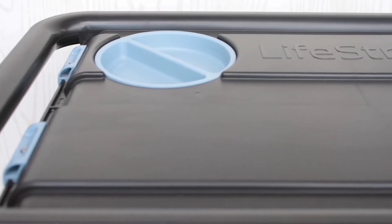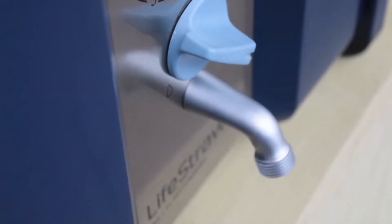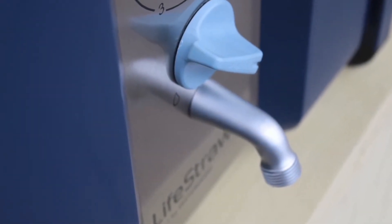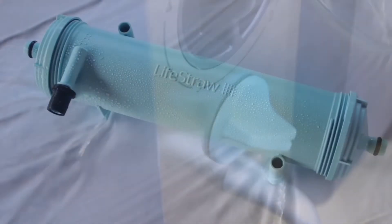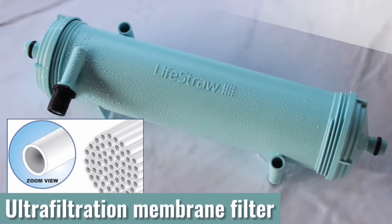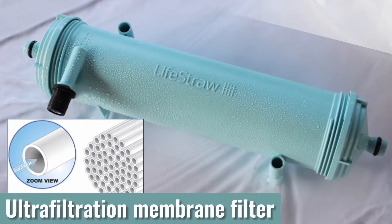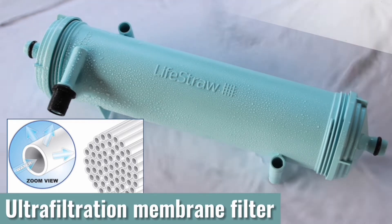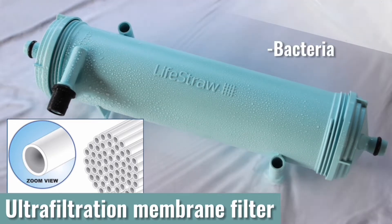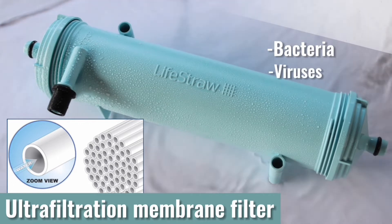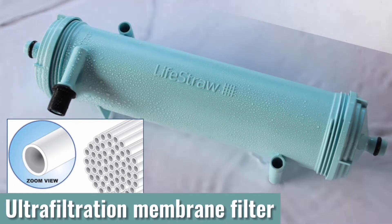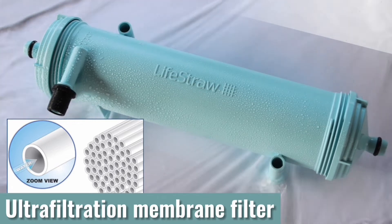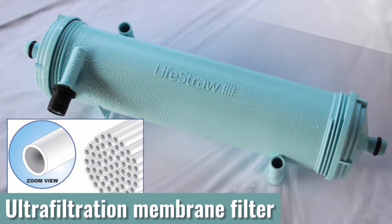What makes Lifestraw Max different from other water filters is its capacity to filter volumes of water. It uses ultramembrane filters that remove 99.99% of bacteria, viruses, parasites, and microplastics. Microorganisms invisible to the naked eye are filtered out, making potable and safe to drink water.